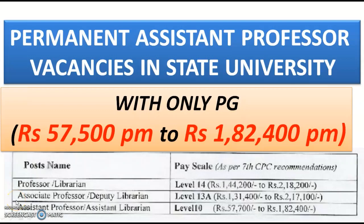In this video we are going to see the permanent assistant professor vacancies from one of the state university. It will be a wonderful opportunity for candidates because with only post graduation you can get the assistant professor level 10 pay scale — that is 57,500 rupees per month to 1,82,400 rupees per month. Apart from assistant professor, professor, librarian, deputy librarian, assistant librarian, and associate professor vacancies are also there, with pay scales as per the seventh central pay commission recommendations.